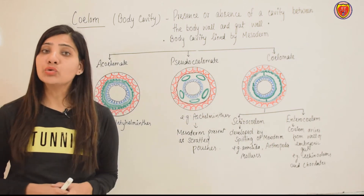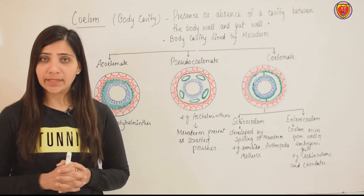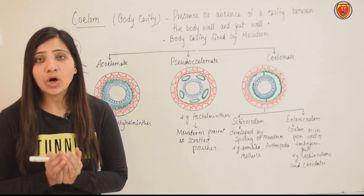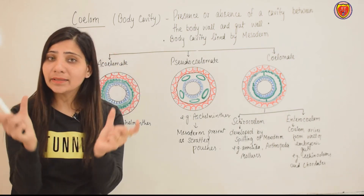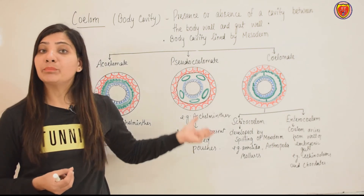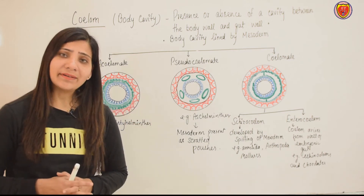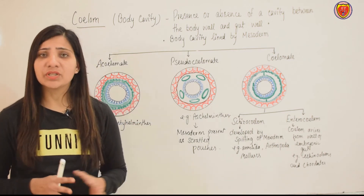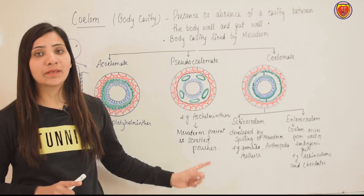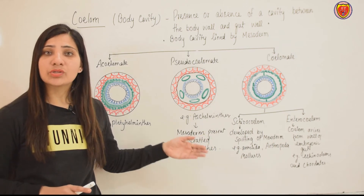Next is the pseudocoelomate — where a cavity has been created, where mesoderm has started to divide, but has not formed a particular lined cavity. It's not a lined cavity, but pouches have been created. There are scattered pouches of mesoderm. This type of coelom is called pseudocoelom, and this animal is called pseudocoelomate.